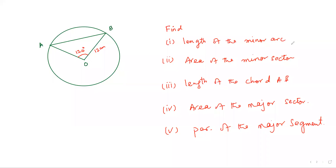The length of the minor arc is simply 120 over 360 into 2 pi into 12 — use your calculator to find its answer. For the area of the minor sector, it is going to be 120 over 360 into pi R squared. And if it said area of the minor segment, then you have to take out the triangle from this.